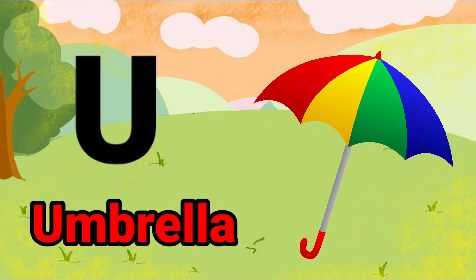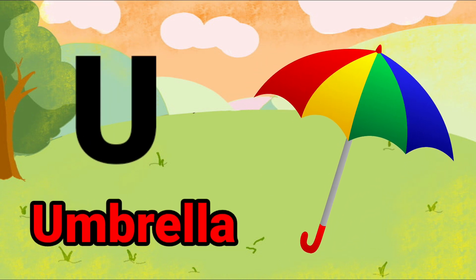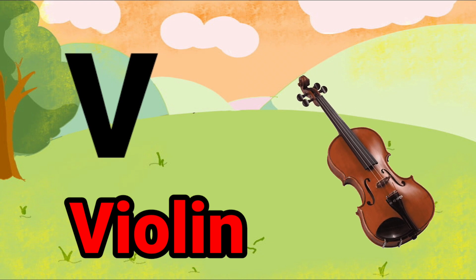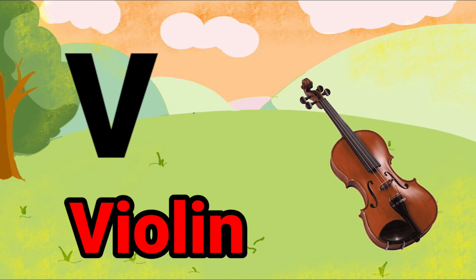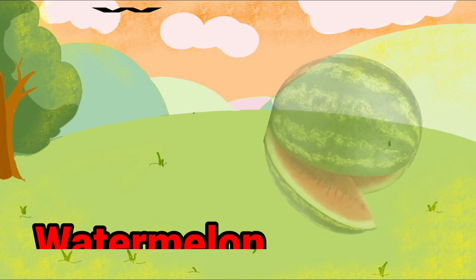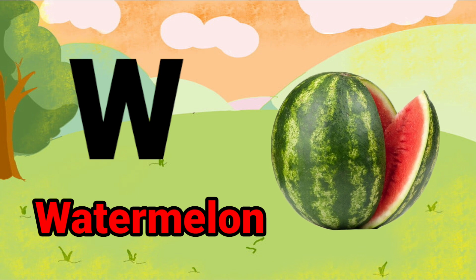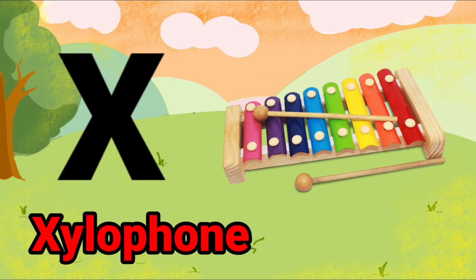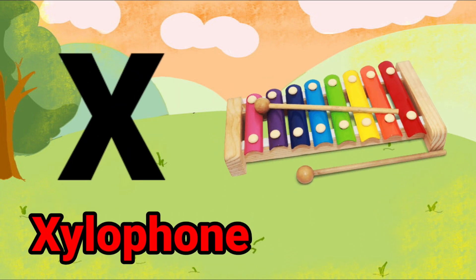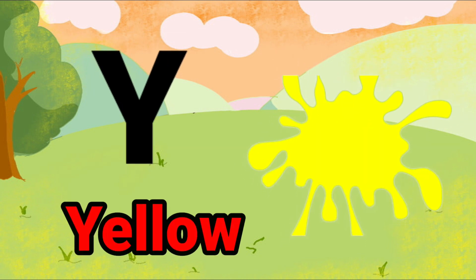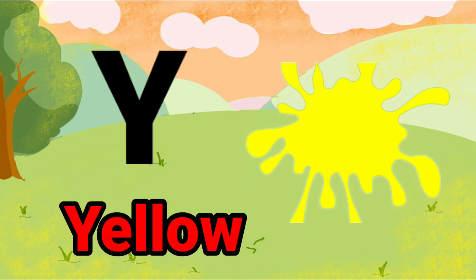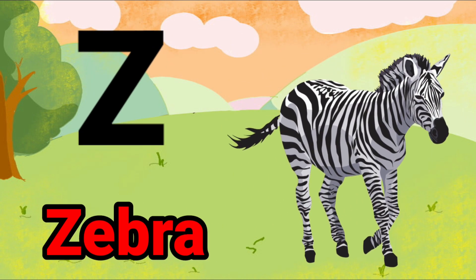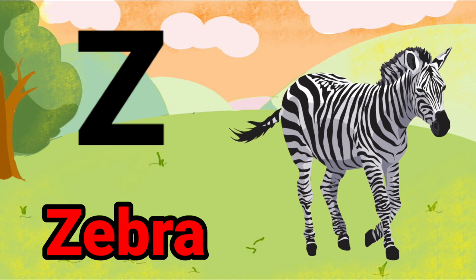U for umbrella, V for violet, W for watermelon, X for xylophone, Y for yellow, Z for zebra.